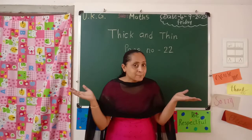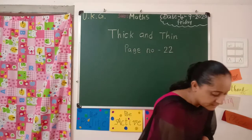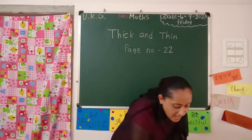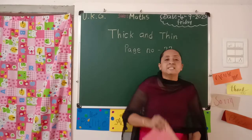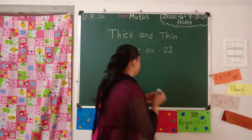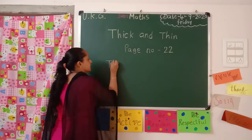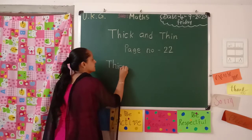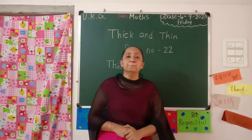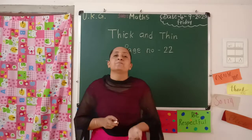So let's start a new concept. Thick and Thin. T and T. Thick — T, H, I, C, K. Thick means chada. Thin — chada.